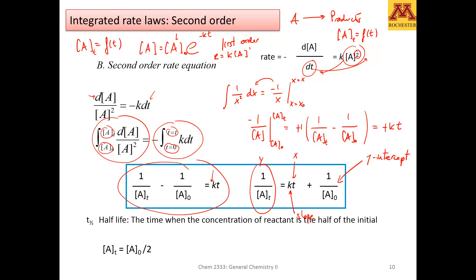We can also impose the half-life conditions: what is the time when the initial concentration gets halved? You substitute this in here and solve for t. What you find is that, unlike first order, the half-life for second order does depend on the initial concentration. So this is a big difference between first order and second order.